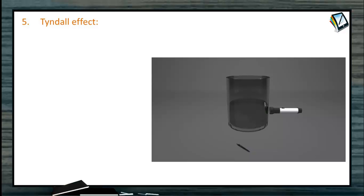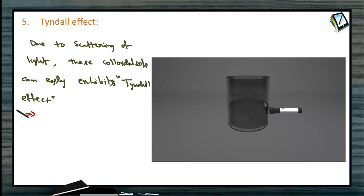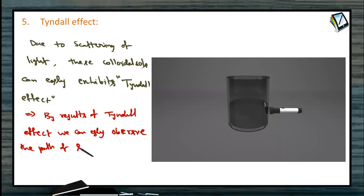The next property is the Tyndall effect. This effect is observed when light passes through a colloidal solution in a dark place. If you pass light through a true solution, the small size of the solute particles means they cannot scatter the light. But in colloidal solutions, the size of the colloidal particles is much larger compared to true solutions, so they can easily scatter light, which you can observe in dark places. Due to scattering of light, colloidal sols exhibit the Tyndall effect, and you can observe the path of light through the colloidal solution.